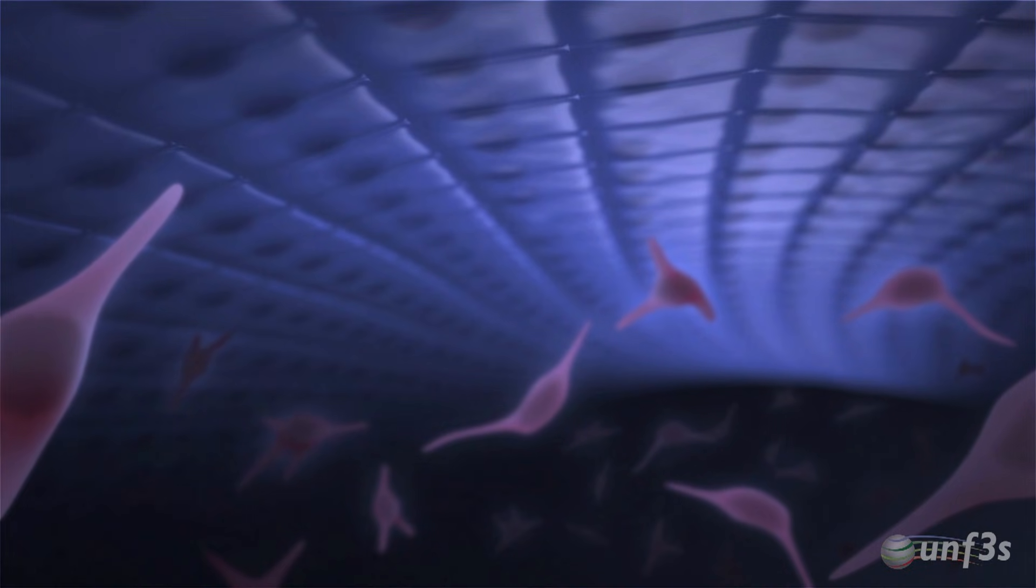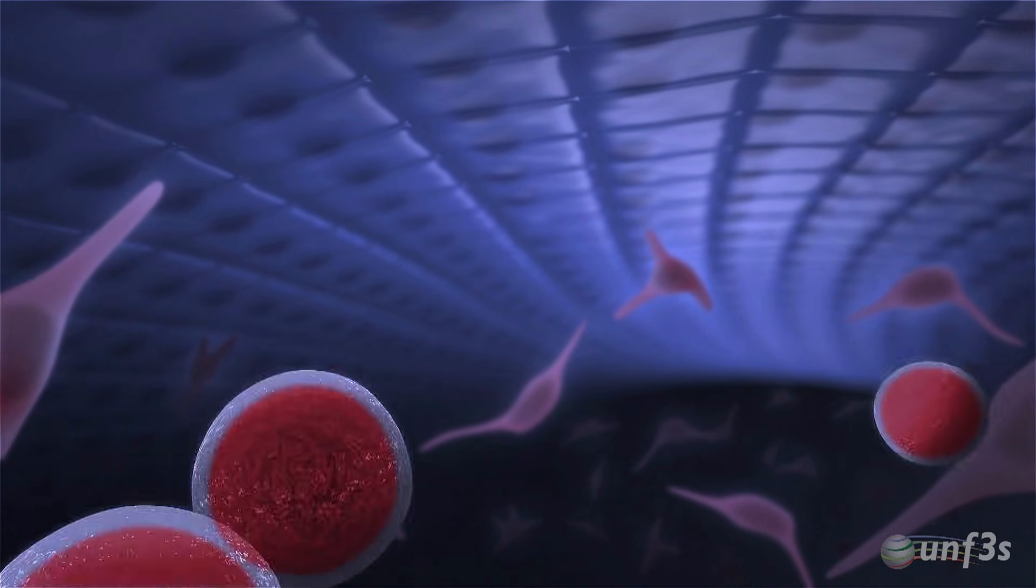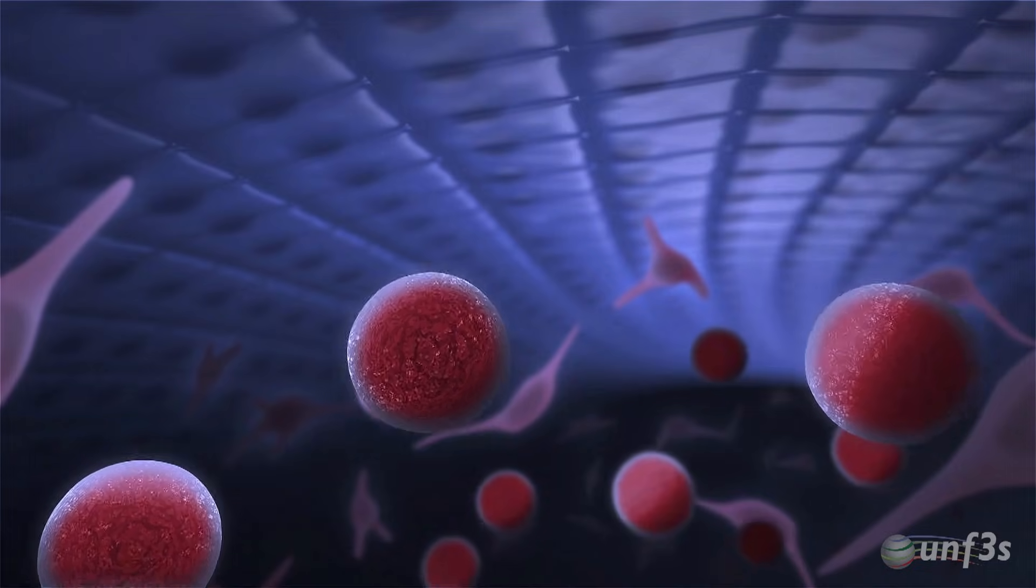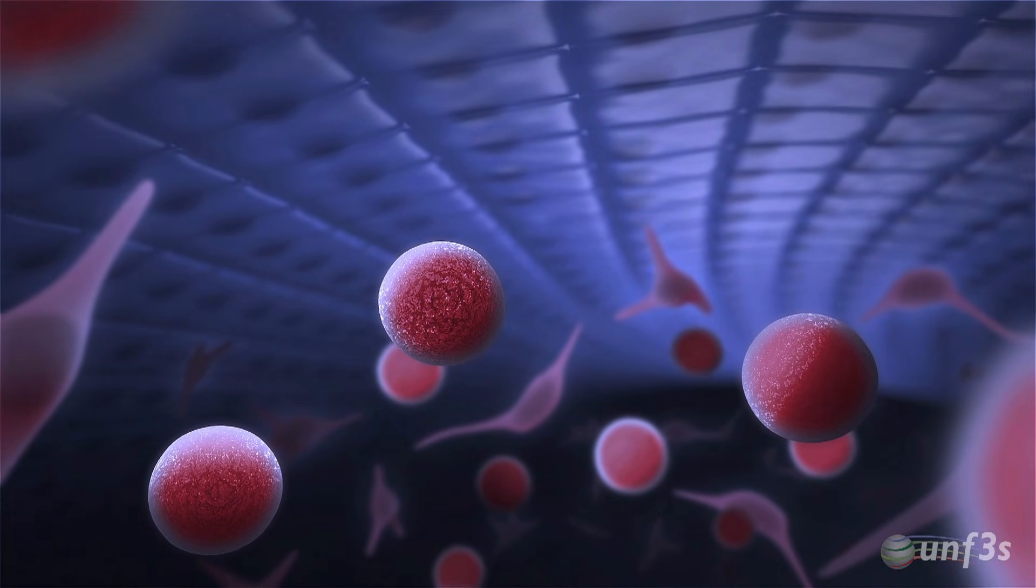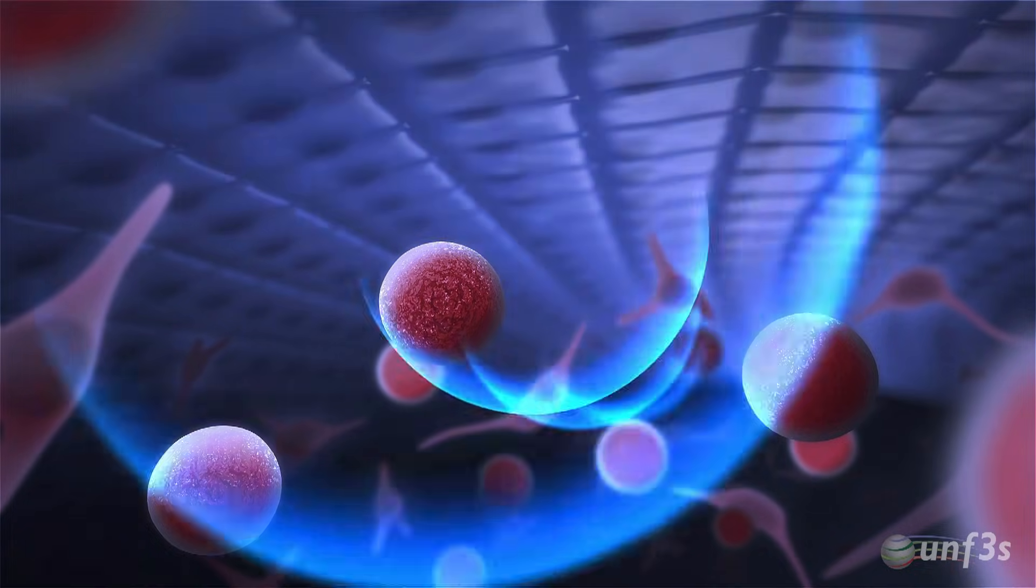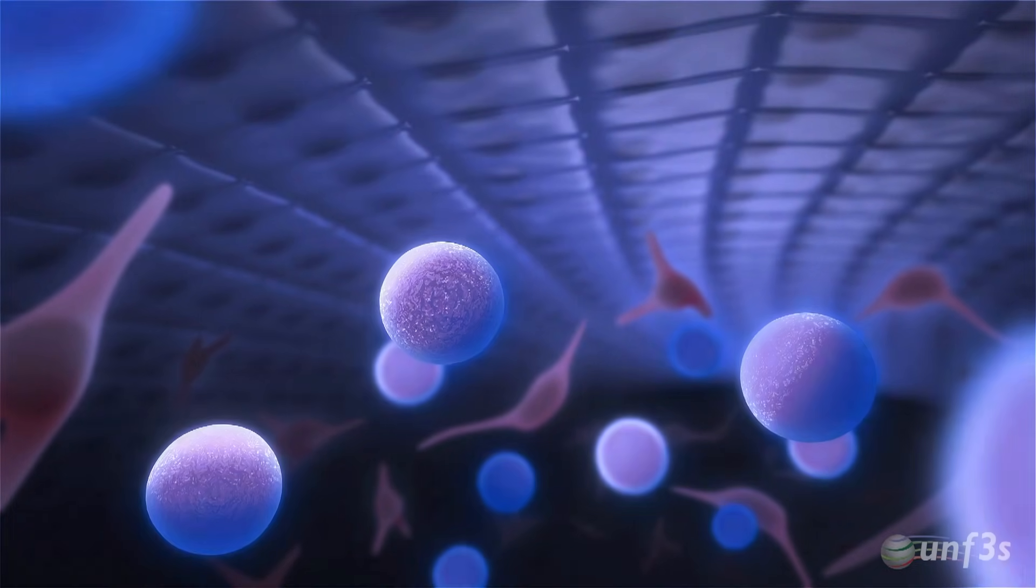Under this odontogenic epithelium, the mesenchyme is turned into ectomesenchyme arising from neural crest cells. The odontogenic epithelium then sends induction messages that convert the neural crest cells into odontogenic cells.